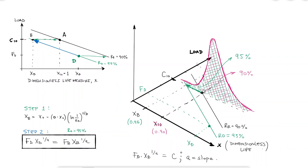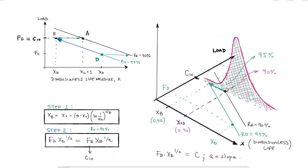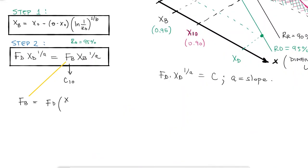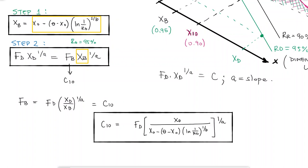And of course by previously knowing the dimensionless life of B, XB, found through the reliability equation from today. Since the force of B, FB, is in the same y-axis value as the catalog load rating C10, this is the expression we would use to find the catalog load rating when the reliability we're looking for is different than the one the manufacturer uses.